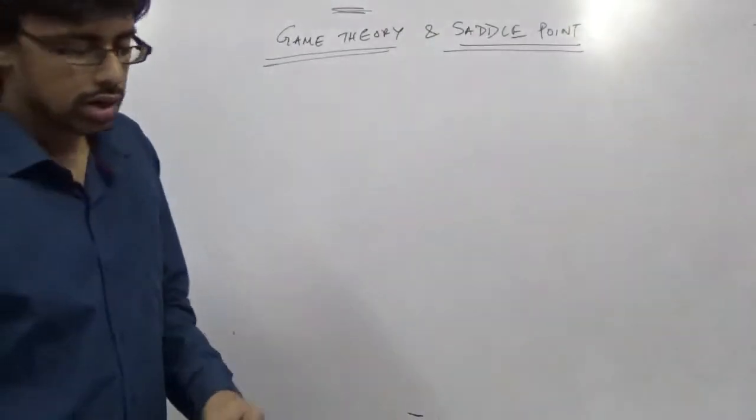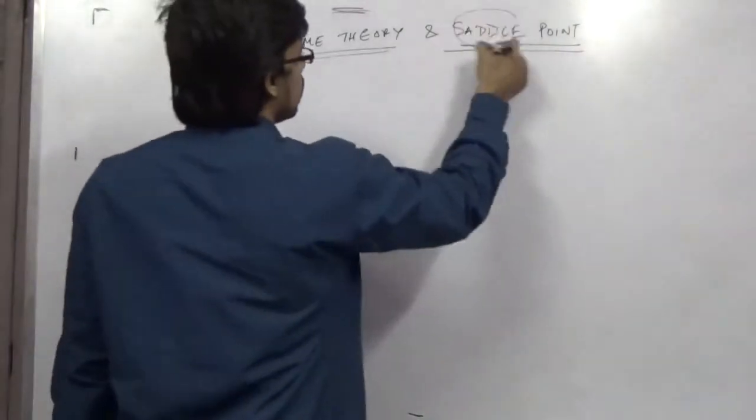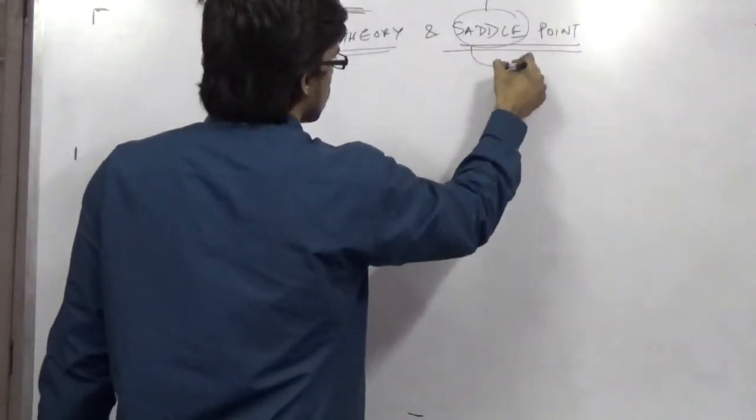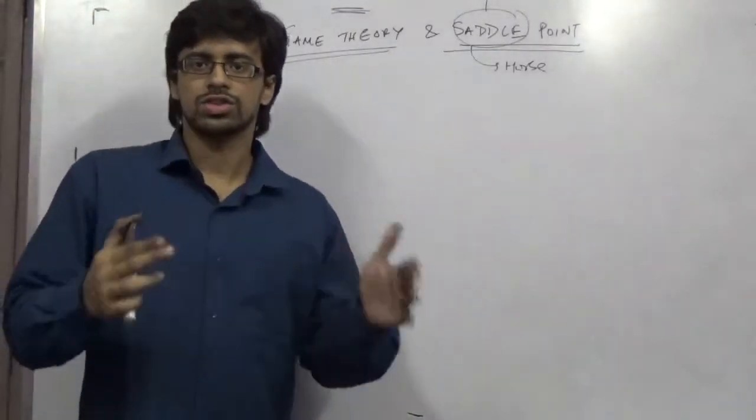For that, you need to have a matrix. What is the saddle point? Saddle means it's written to horse. So the horseback where you actually ride a seat, that is called a saddle. It's a stable position.